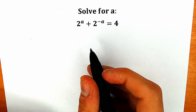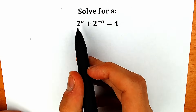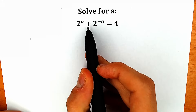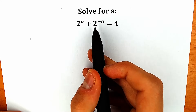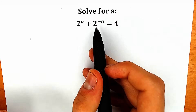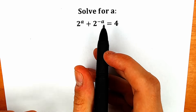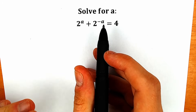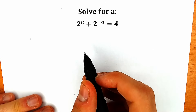Hello everyone, happy to see you here on my channel Higher Mathematics. Today we have a very interesting question: 2 to the power a plus 2 to the power minus a equals 4, and we need to find a. If you have your solution, you can write it down in the comment section because we will check our solution here in just a few minutes.